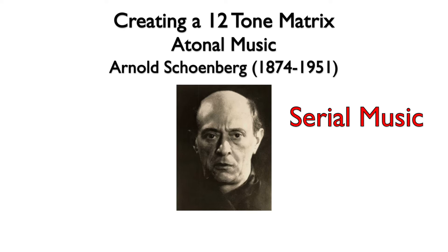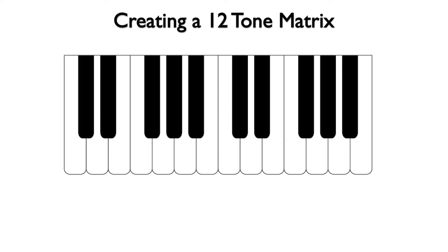In this video, we will discuss 12-tone serial music as developed by Arnold Schoenberg. In this type of composition, there is an attempt to make each note of equal importance. With each note being equal, there is no tonic. To do this, the composition is based on a 12-tone row that includes each of the notes of the chromatic scale.